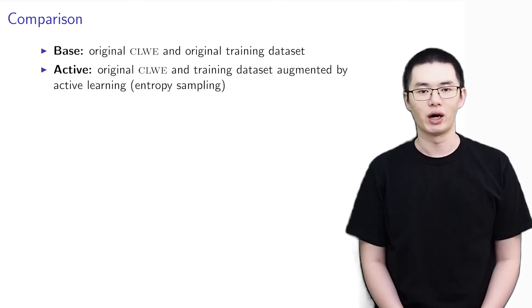The active model improves the base model by augmenting the training set with active learning. Specifically, we label 50 Ilocano documents with the highest model uncertainty and use them as additional training examples.